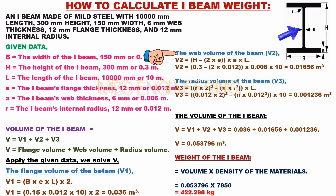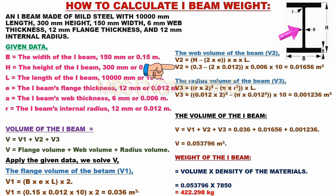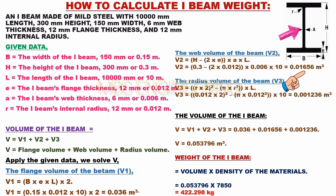Next, we calculate the web volume of the I-beam, V2. V2 = (H − 2A) × A × L = (0.3 − 2 × 0.012) × 0.006 × 10 = 0.01656 cubic meters. The web volume of the I-beam V2 is 0.01656 cubic meters.